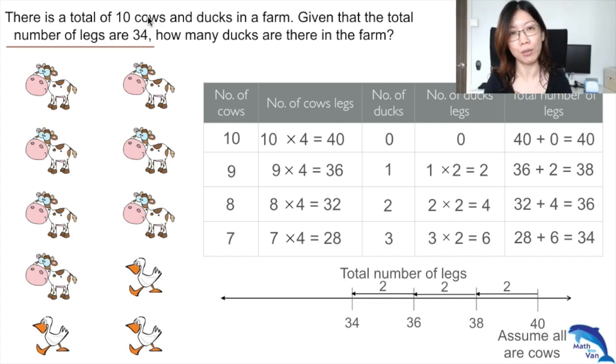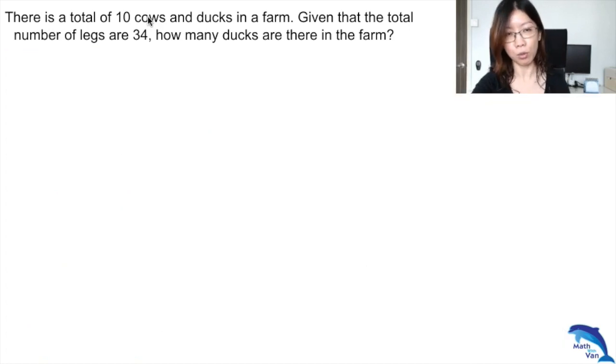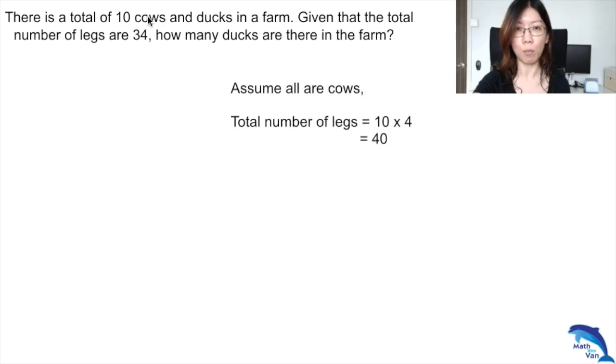Now let's refresh. Using the assumption method, we start off by assuming all are a particular type of animal. In this case, we assume all are cows. That will give a total of 40 legs.